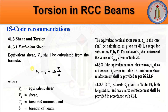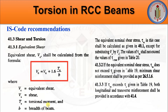For equivalent shear, Ve shall be calculated from the formula: Ve = Vu + 1.6 × (Tu / b), where Ve is the equivalent shear, Vu is the shear force, Tu is the torsional moment, and b is the breadth of the beam. The equivalent nominal shear stress τve shall be calculated as per Clause 40.1, substituting Vu by Ve. The values of τve shall not exceed τc,max given in Table 20, which is the permissible shear stress. If the equivalent nominal shear stress τve does not exceed τc given in Table 19, minimum shear reinforcement shall be provided as per clause 26.5.1.6.